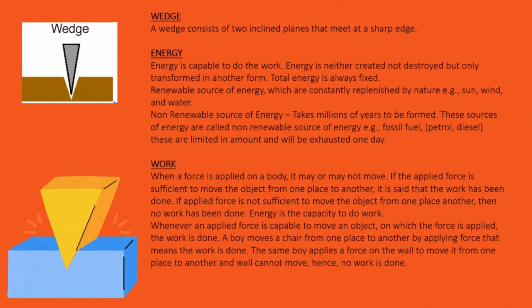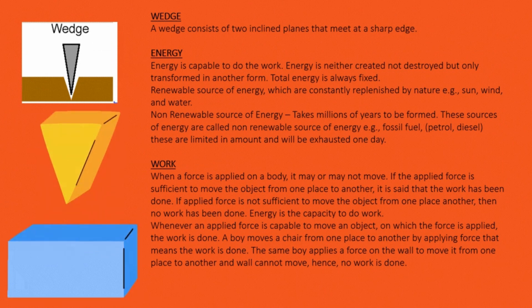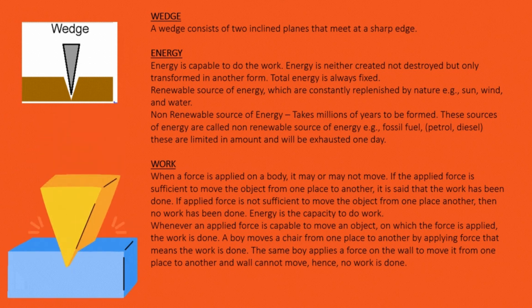Wedge: A wedge consists of two inclined planes that meet at a sharp edge. Energy: Energy is capable to do the work. Energy is neither created nor destroyed but only transformed in another form. Total energy is always fixed. Renewable source of energy which are constantly replenished by nature, for example, sun, wind and water. Non-renewable source of energy takes millions of years to be formed. These sources of energy are called non-renewable source of energy, for example, fossil fuel, petrol, diesel. These are limited in amount and will be exhausted one day.